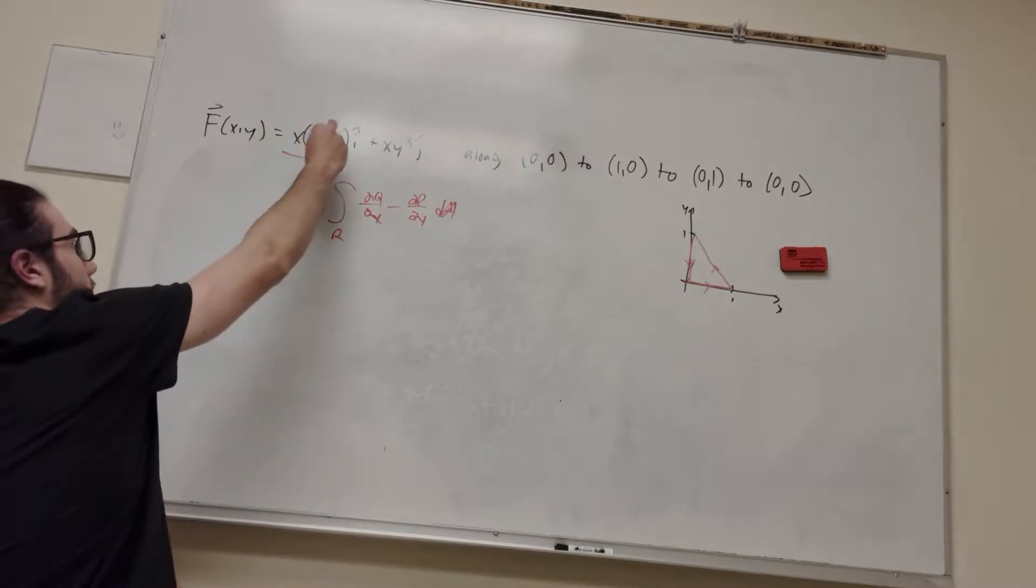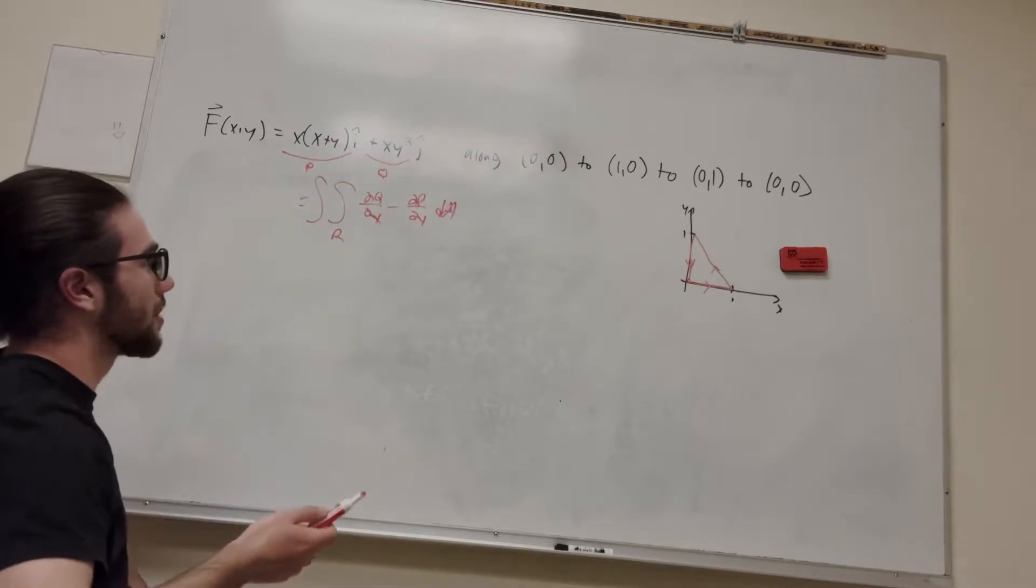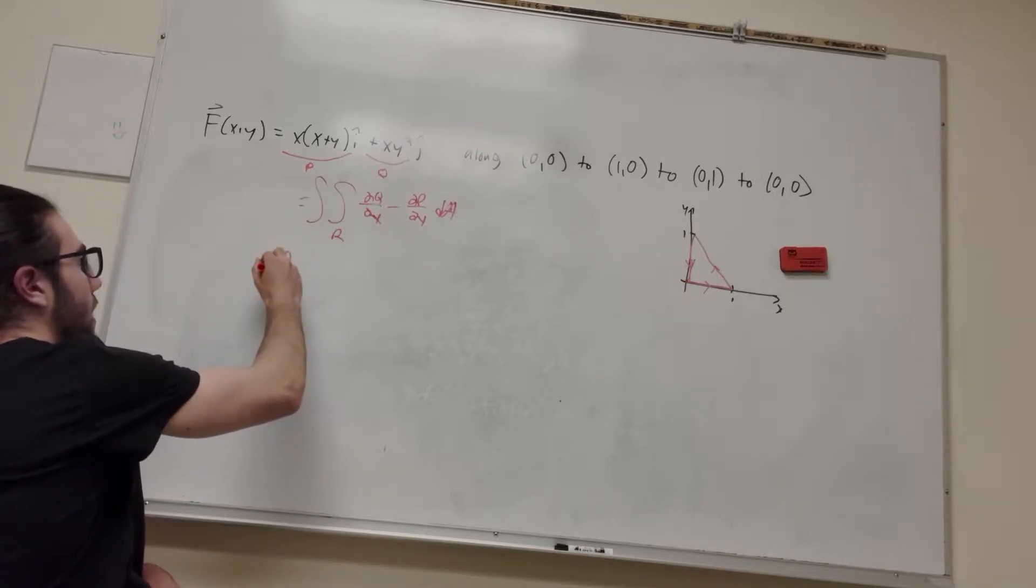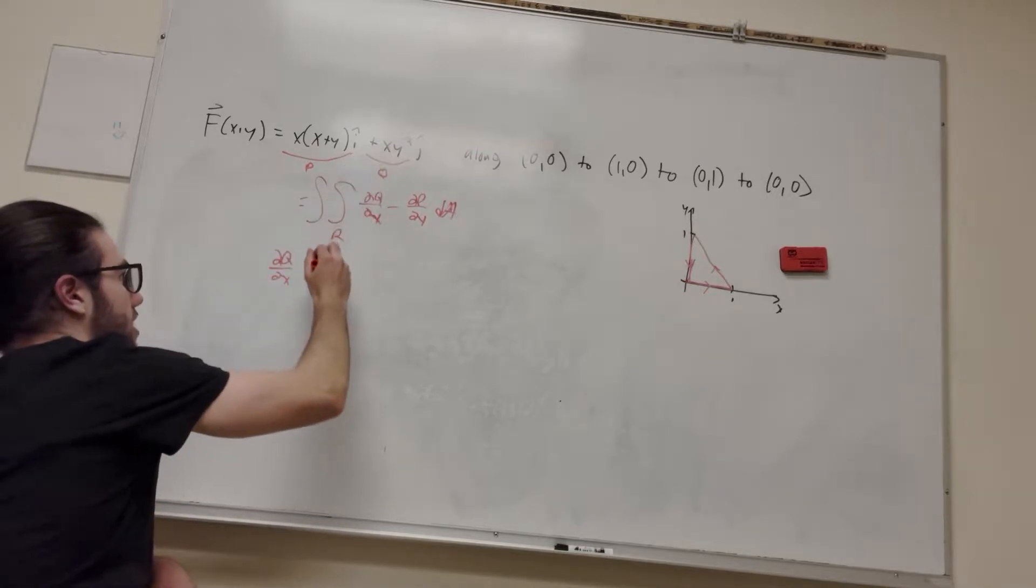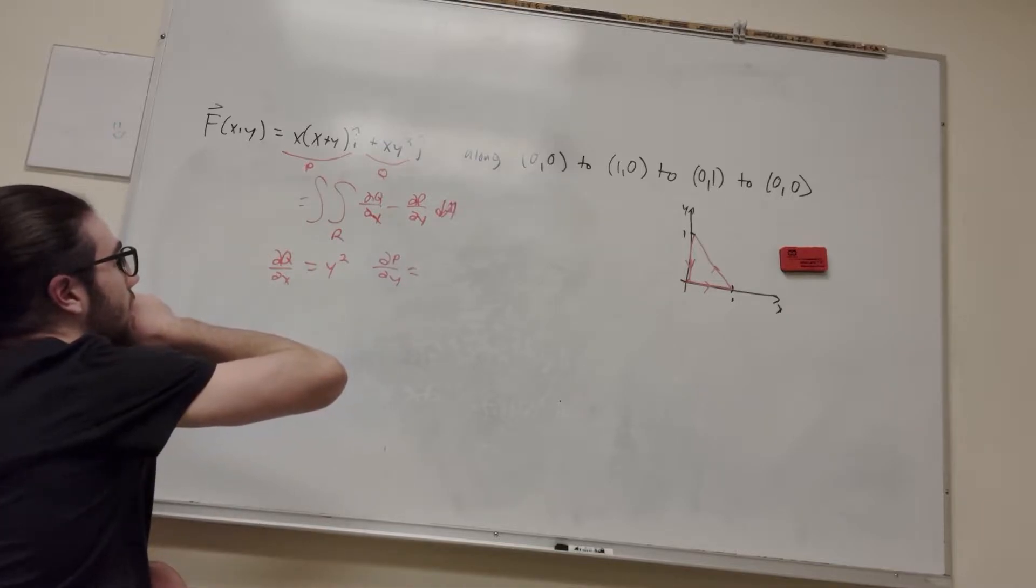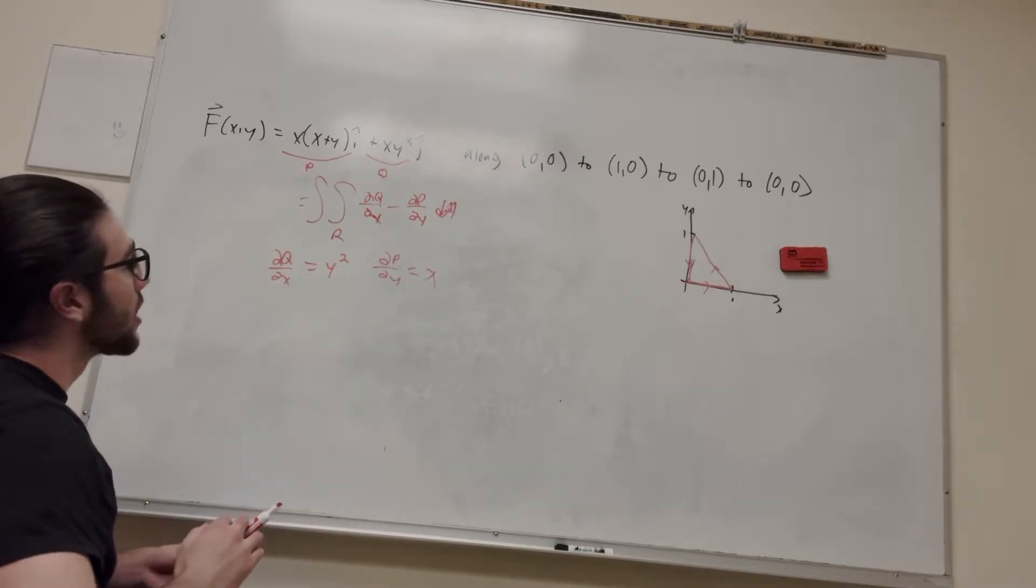So this is going to be equal to del q del x minus del p del y, the derivative of the area. This is p, and this is q, right? So of course we just need to find q with respect to x and p with respect to y. So the derivative of q with respect to x is going to be y squared, and the derivative of p with respect to y is going to be x squared plus xy, so it's going to be x. So that's pretty simple.